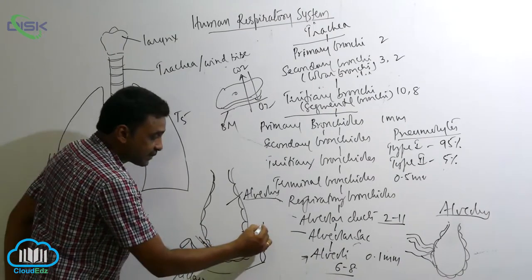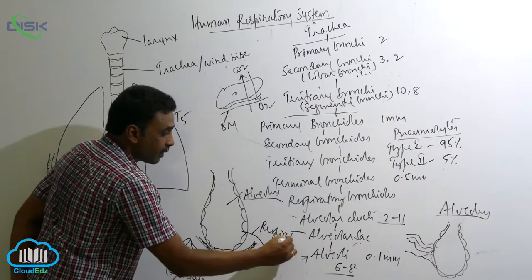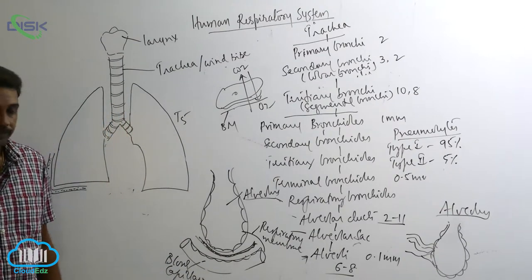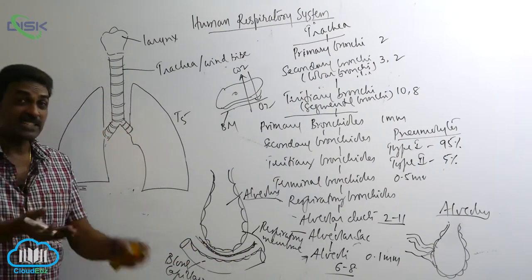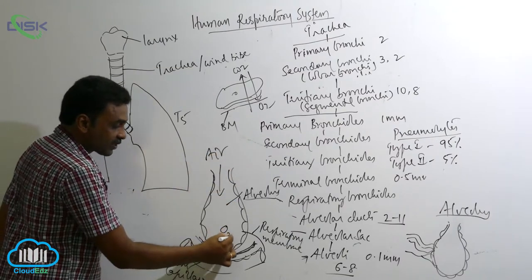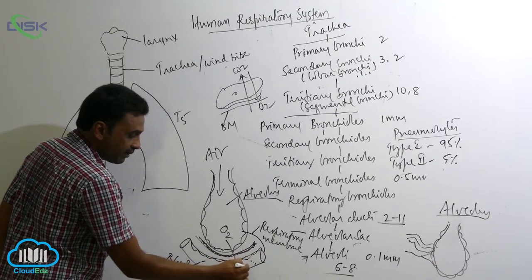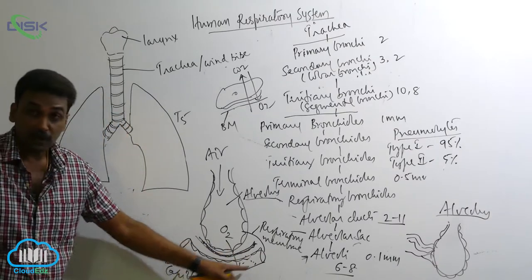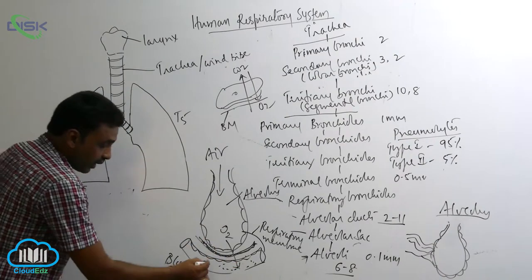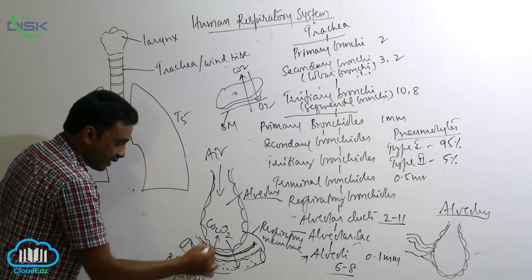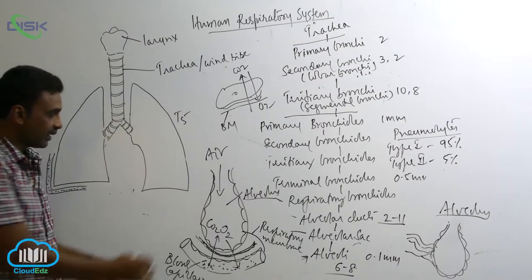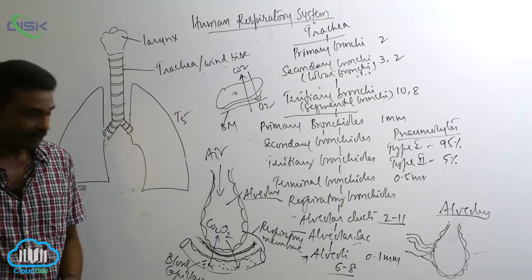This area — the simple squamous epithelium of the alveolus, two fused layers of basement membrane, and the simple squamous endothelium of the blood capillary — together makes up the respiratory membrane. This is the area where exchange of gases occurs. When air is inhaled, oxygen from the alveolus enters into the blood capillaries, and carbon dioxide from the blood enters into the alveolus and is pushed outside.